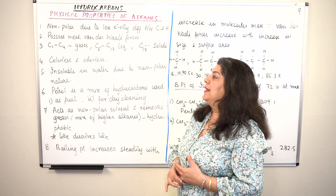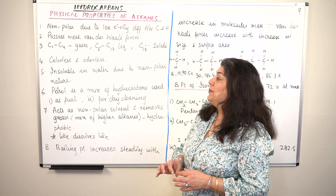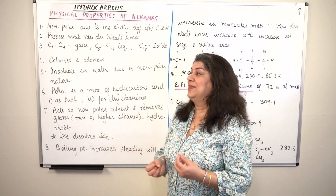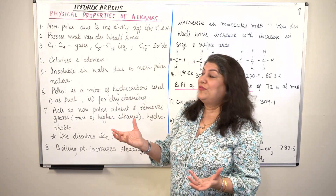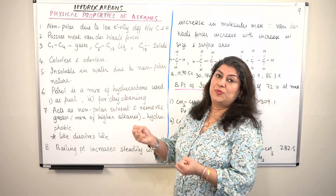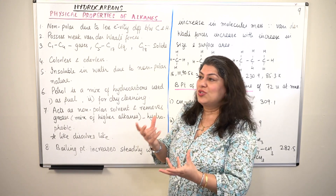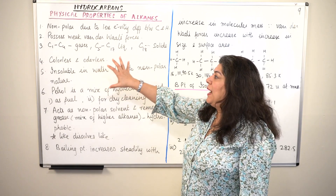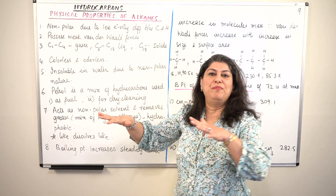Another property is that alkanes are colorless and odorless. Ionic compounds usually have colors — for example, the beautiful blue of copper sulfate — because ions lose electrons when heated and jumping electrons create color in the flame. As you move to more covalent compounds like alkanes, they are colorless and kind of bland.